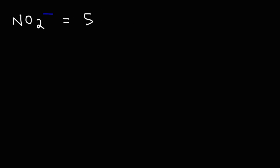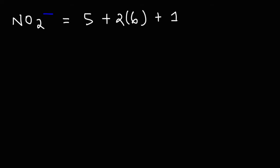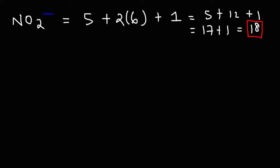Nitrogen is found in group 5A of the periodic table, and so it has five valence electrons. Oxygen is a chalcogen found in group 6A of the periodic table, and so it has six valence electrons. Because we have two oxygen atoms, we need to multiply that by two. We also need to add one because of the negative charge — if we had a minus two charge, we would add two electrons. So: six times two is 12, five plus 12 is 17, and 17 plus one is 18. That is the number of valence electrons in the nitrite ion Lewis structure.